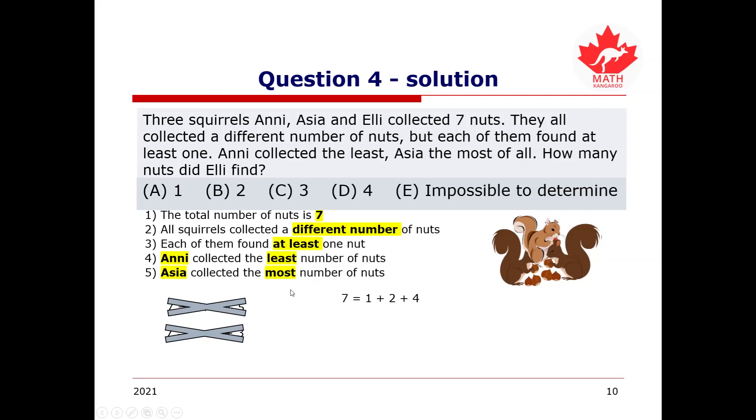And, from clue number four and clue number five, since Annie collected the least number of nuts, she must have been the squirrel that collected the one nut, and since Asia collected the most nuts, she must have been the squirrel that collected the four nuts. This means that Ellie has the only number left, which is two nuts. Therefore, our answer will be B, two.